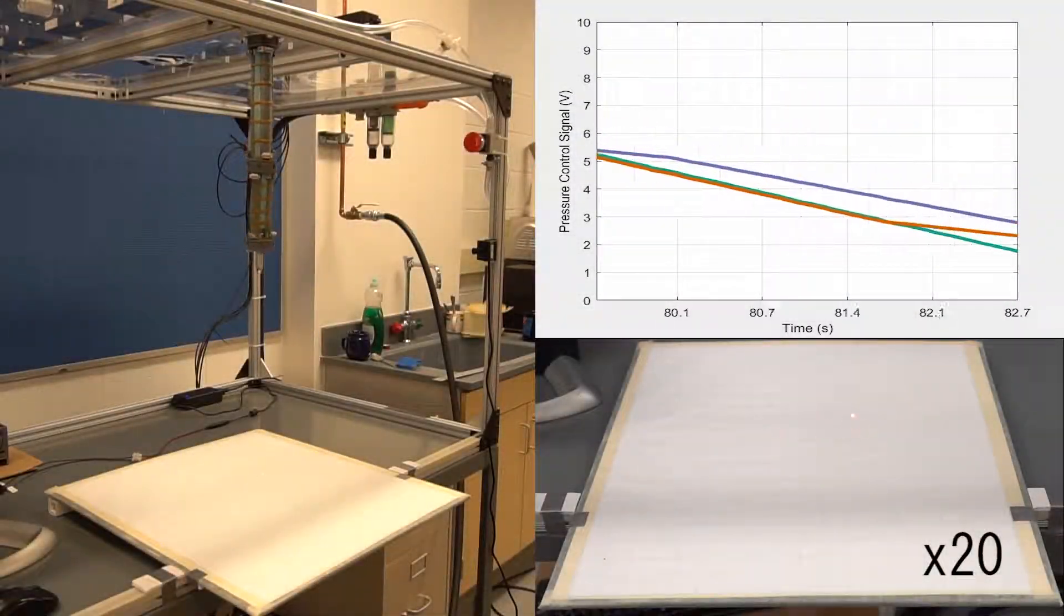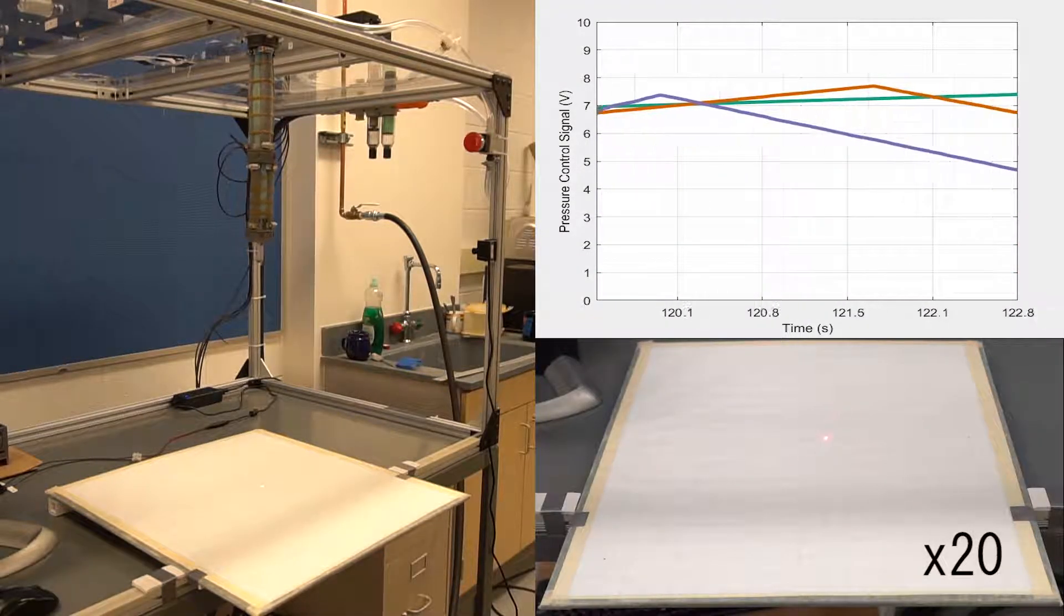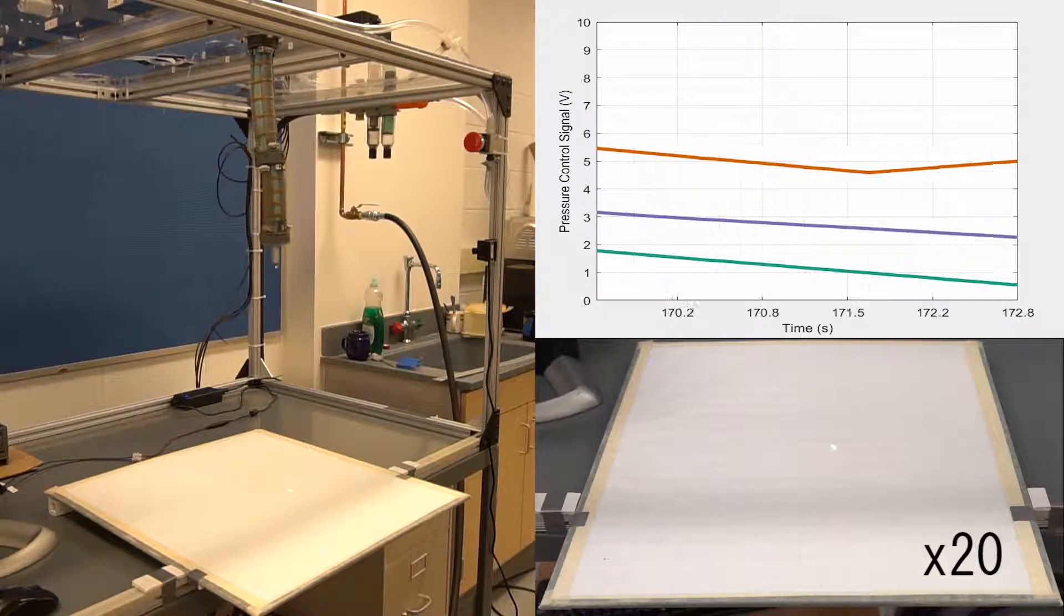We begin by recording the response of the system under random control inputs. Because the robot is soft we can do this without risk of damaging the robot or its environment.